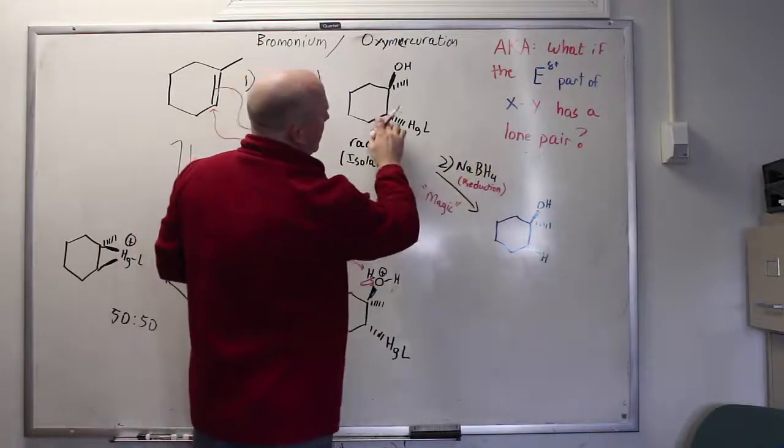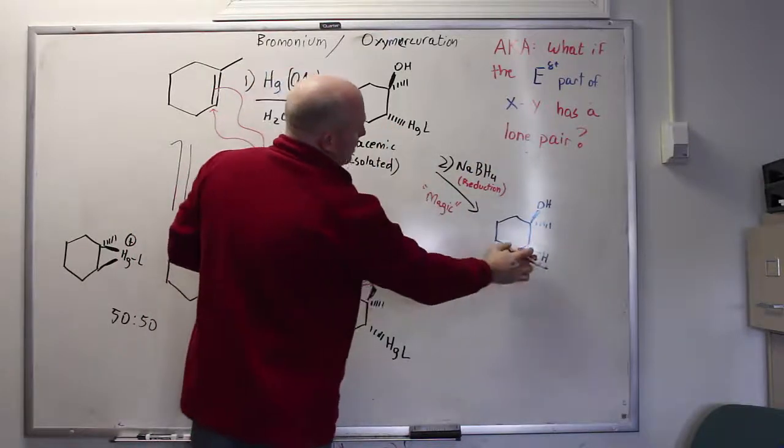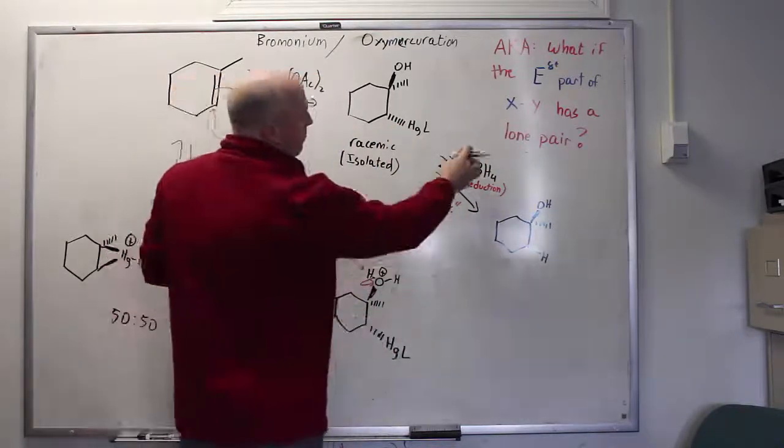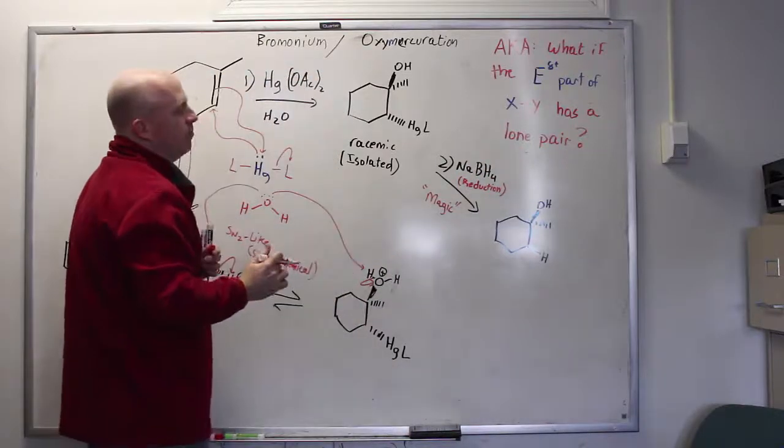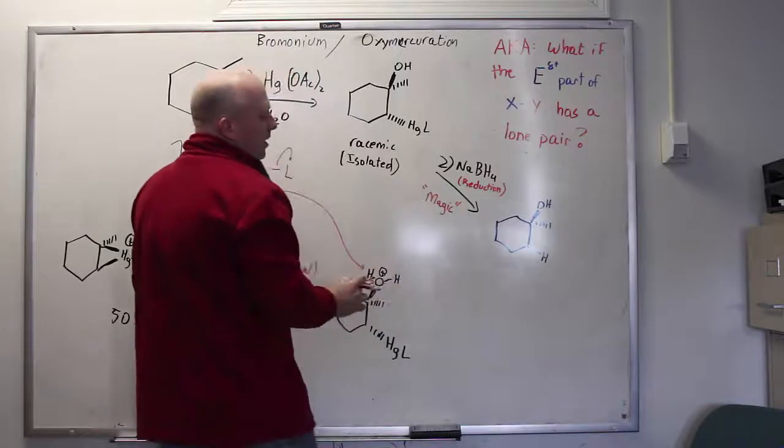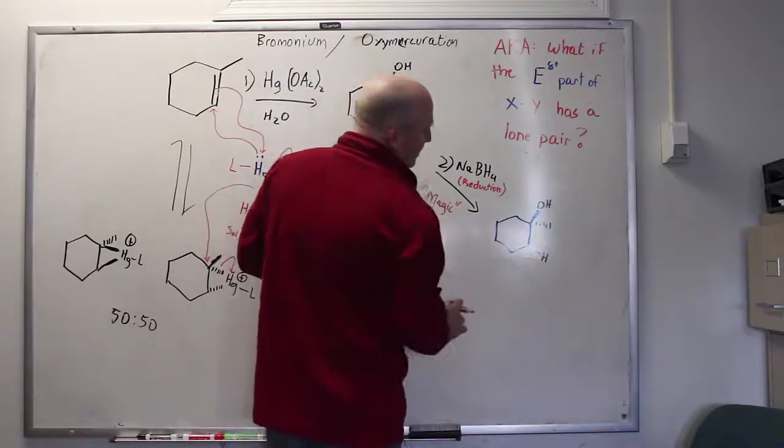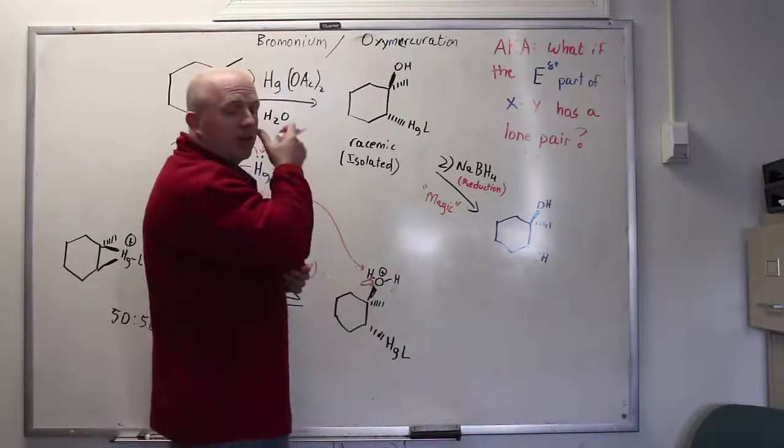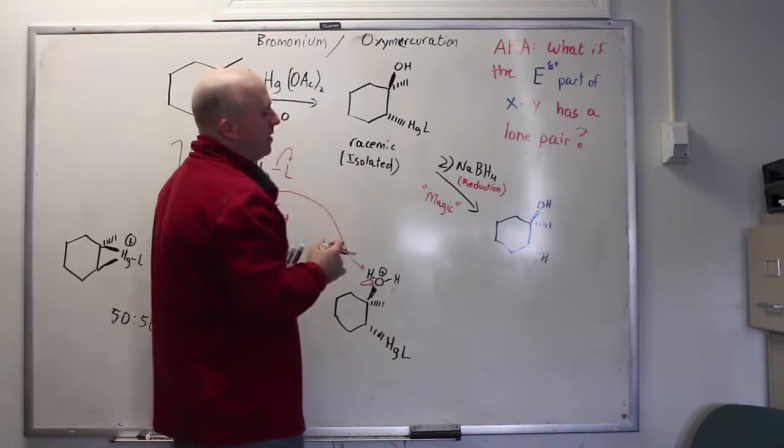What we do is reduce the carbon mercury bond down to a carbon hydrogen bond and the reagent that accomplishes that is sodium borohydride. As far as you're concerned, again, you don't need to know how this works. In practice, what happens is that you replace the carbon mercury bond with a carbon hydrogen bond.